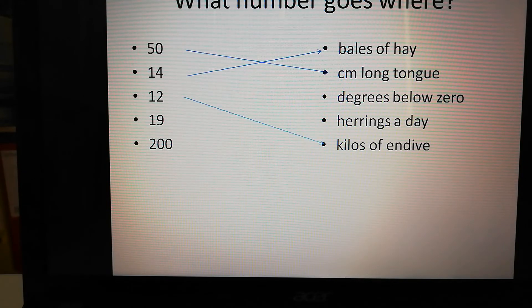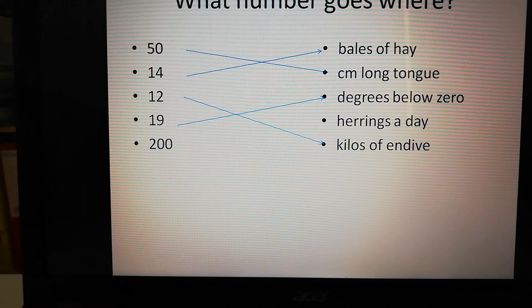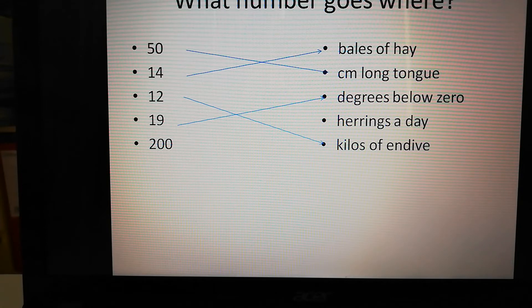12 kilos of endive for the gorillas. 19 degrees below zero. That's how cold the freezer was where they kept the meat for the animals. 200 herrings a day for the penguins. Well done.